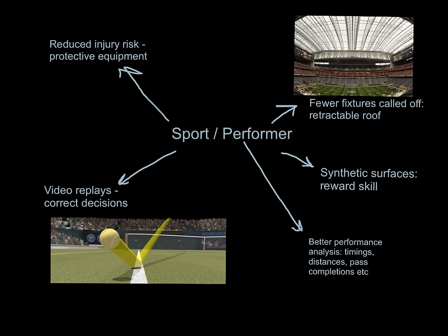We've got things like retractable roofs at places like the Millennium Stadium where we can close the roof and make sure fixtures are not called off — that benefits the sport and the performers, you're guaranteed the game to go ahead. We've also got synthetic surfaces that reward skill. The quality of the surface is maintained — no bobbles, no divots, no potholes, it doesn't get waterlogged. Pitch heating means it's always good to play on, so you don't get any unlucky bounces or rolls of the ball, which again benefits the sport and the performer.